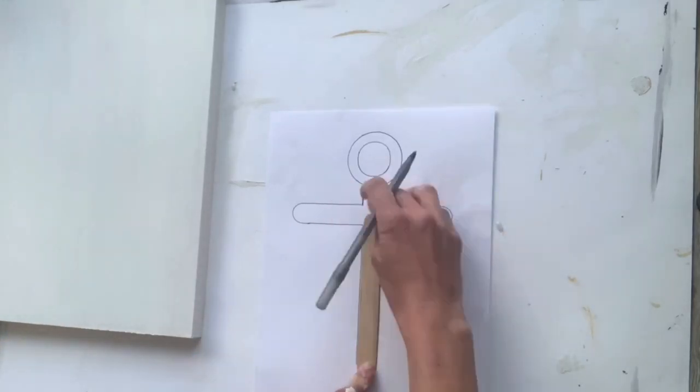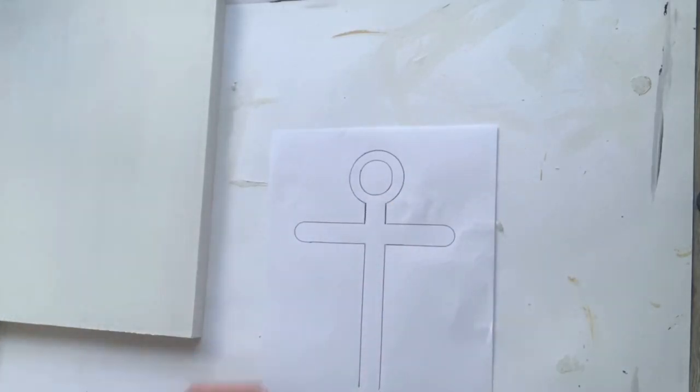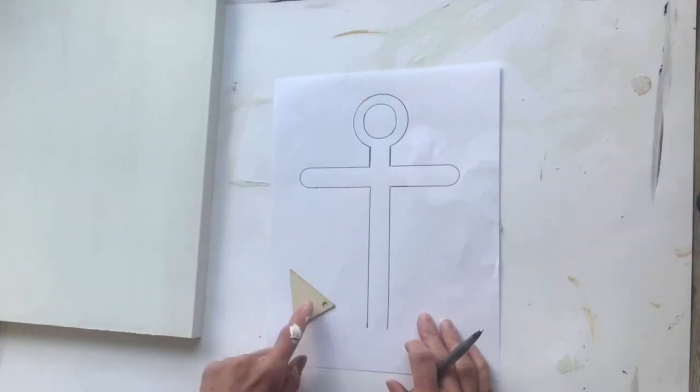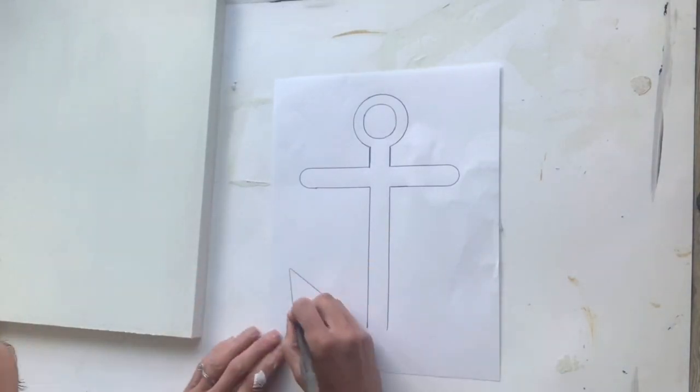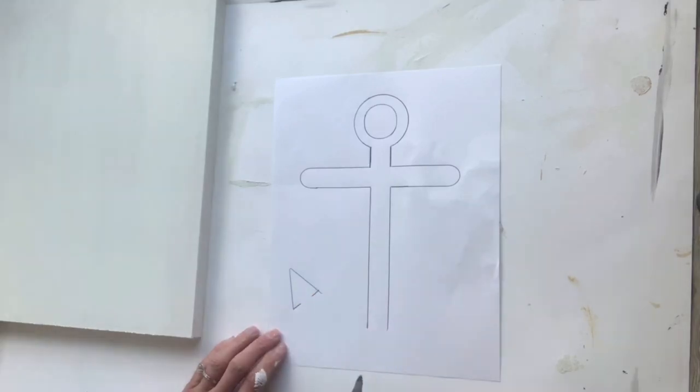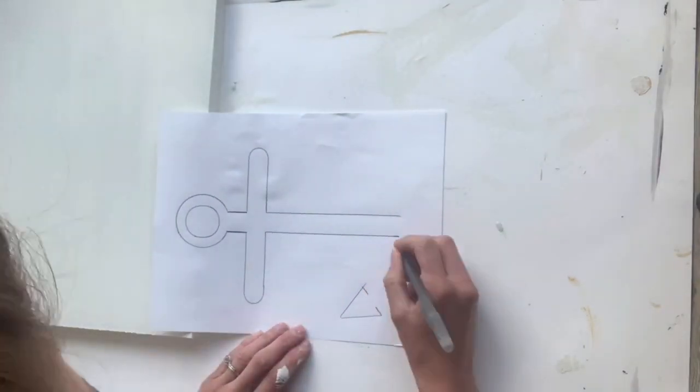I have a popsicle stick here which was the perfect shape and I had a small little triangle, and I am drawing an anchor.